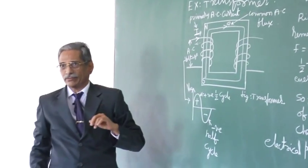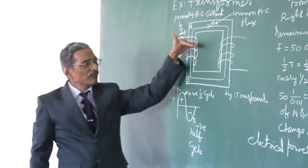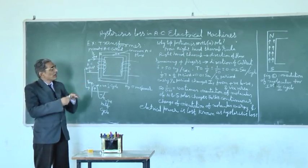Of course, in negative half cycle. Now, let us discuss only positive half cycle, means direction of current is like this.